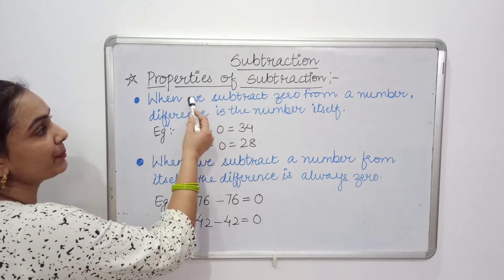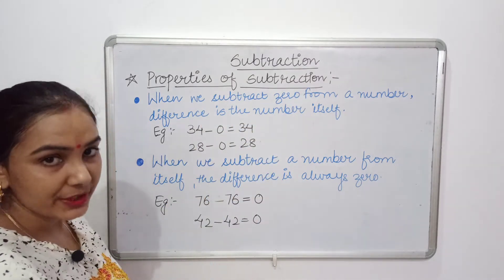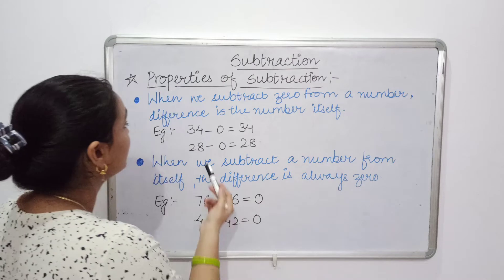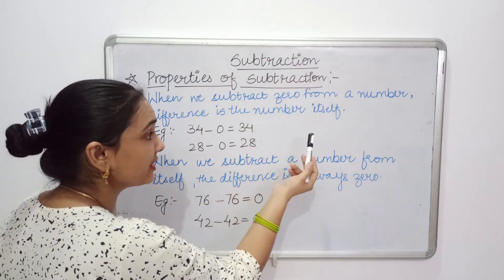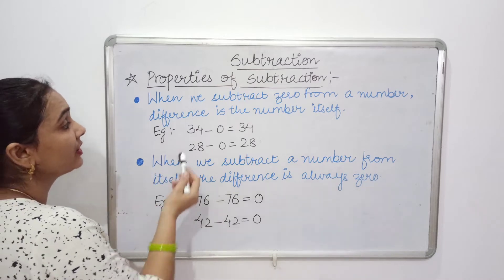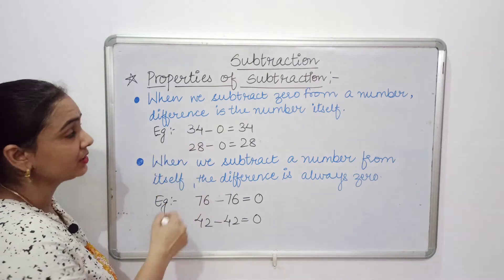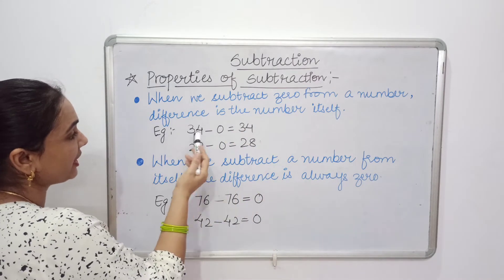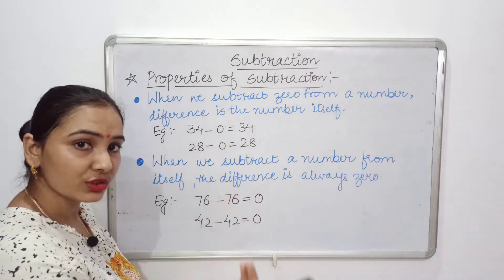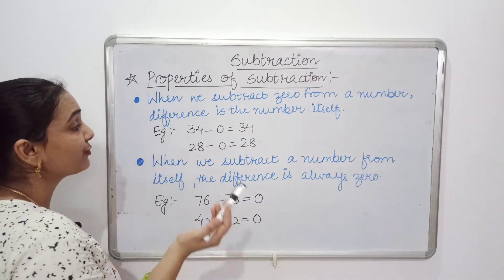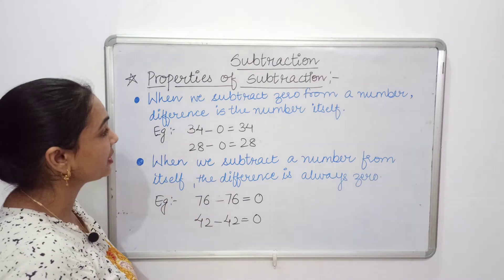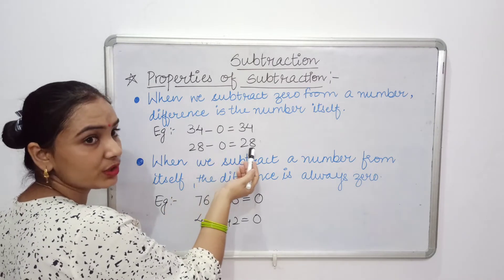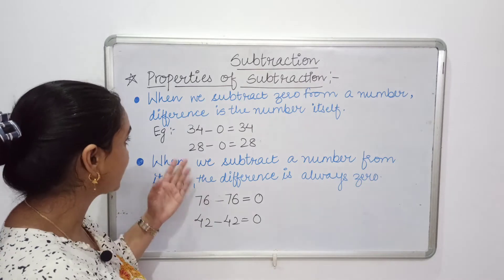Now we will study the properties of subtraction. The first property is: when we subtract 0 from a number, the difference is the number itself. For example, 34 minus 0 equals 34, and 28 minus 0 equals 28. If 0 is subtracted from a number, the result will be the number itself.